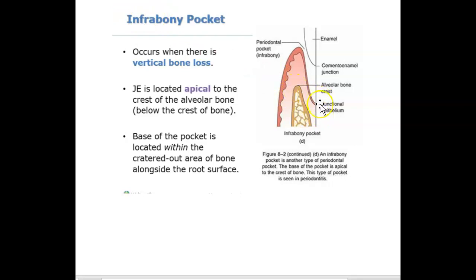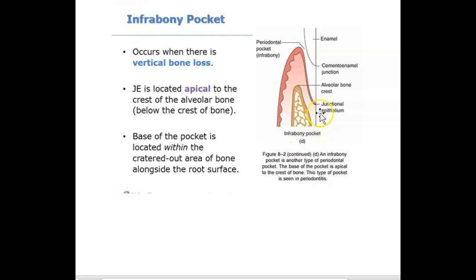Below the bone. So when the junctional epithelium is below the crest of the bone, it's known as an infrabony pocket. Here we can have again a seven or eight millimeter pocket, and this pocket is known as an infrabony pocket because the junctional epithelium is apical or below the bone.